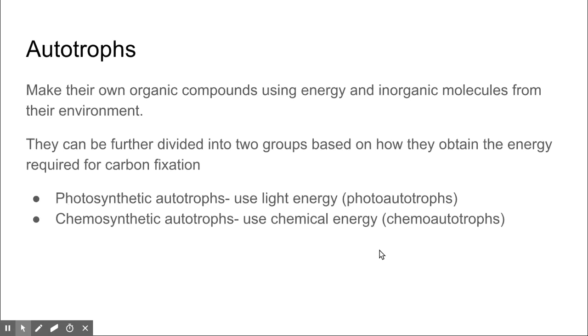Autotrophs make their own food from inorganic molecules from their environment. We can break these autotrophs into further categories based on how they obtain the energy required for carbon fixation. Those two groups are photosynthetic autotrophs, which use light energy, and chemosynthetic autotrophs, which use chemical energy to fix carbon.